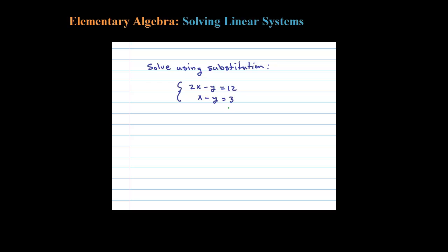We're asked to solve this using substitution. The first step in substitution is to isolate one of the variables. It looks like I can get x by itself simply by adding y — that's the easiest way to go. If I do that, I have x equals y plus 3, after adding y to both sides.